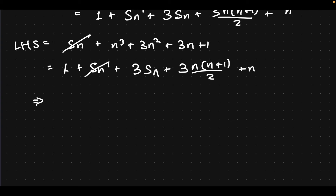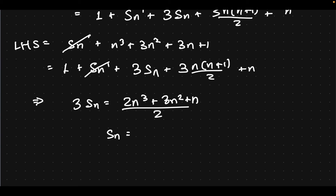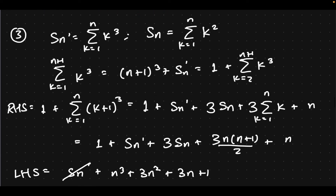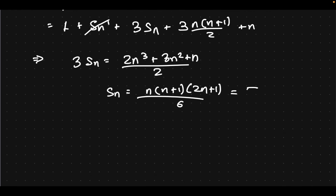And we're left with — I will skip lots of steps — 3 times Sn gives you 2n cubed plus 3n squared plus n. And Sn is then, factorizing everything out, n times n plus 1 times 2n plus 1 over 6. That should be the answer. Apologies for Sn and Sn prime being conflated — we're just using closely related, closely denoted variables. The original function we were expanding about was Sn prime. And there we go — that is indeed the formula for the sum of squares of n integers.